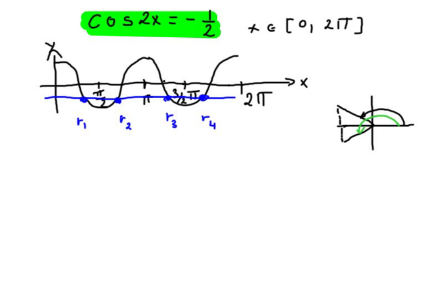Alright, cosine 2x is equal to negative 1 over 2. So what we see on the screen, the domain is 0 to 2 pi.